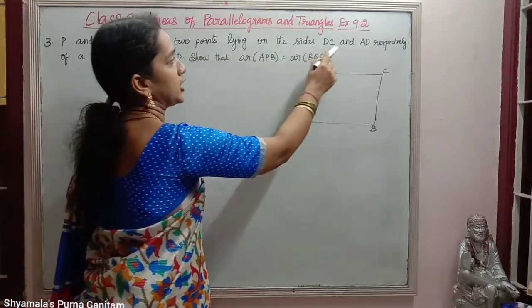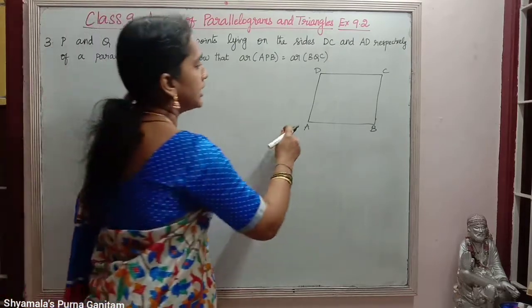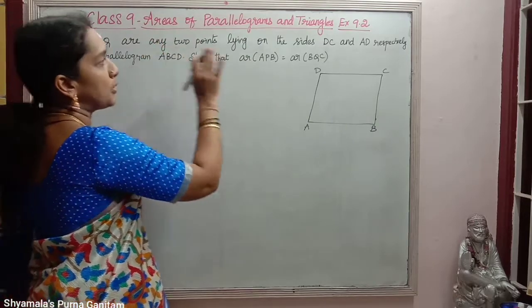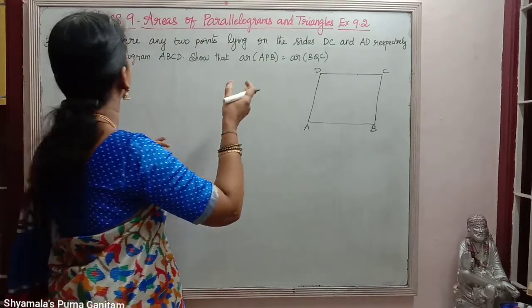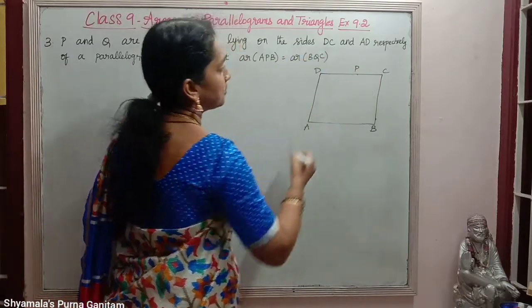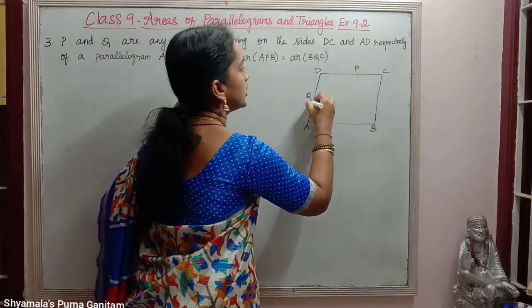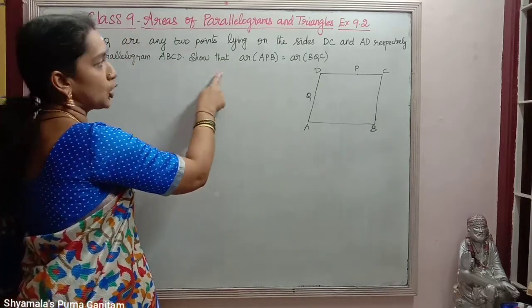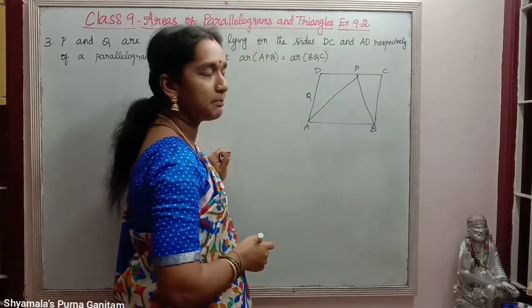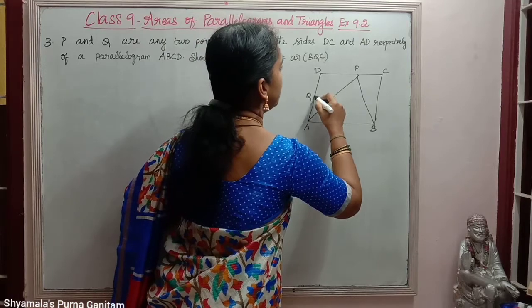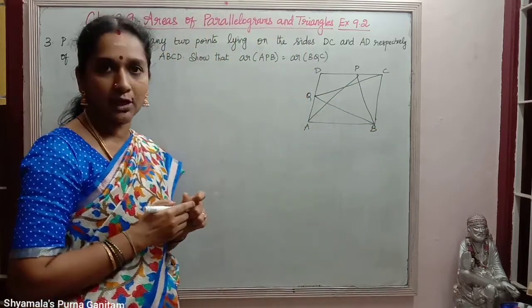P and Q are any two points lying on the sides DC and AD respectively of a parallelogram ABCD. So ABCD is a parallelogram. It is not given as a midpoint, so the point can be anywhere on the line. P is a point on DC and Q is a point on AD. We need to show that area of triangle APB is equal to area of triangle BQC.